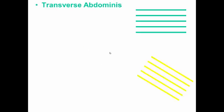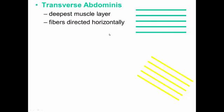So from deep to superficial, we have our transverse abdominus, and it's named for its transverse aligned fibers. Deepest muscle layer, they're directed horizontally, and their function is to compress the abdomen.